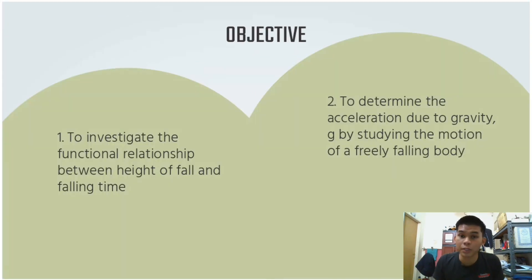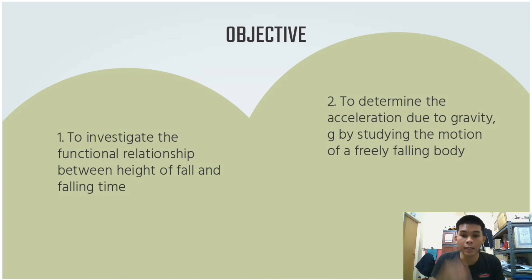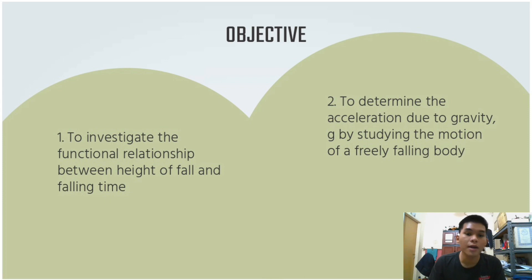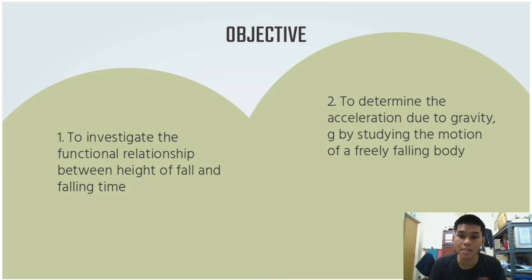The objectives of this experiment are: first, to investigate the functional relationship between height of fall and falling time; and second, to determine the acceleration due to gravity, g, by studying the motion of a freely falling body from the highest point to the lowest, recording the time taken to calculate the acceleration.